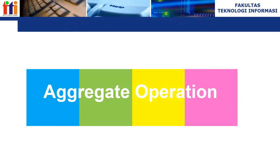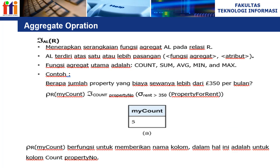Berikutnya kita masuk ke pembahasan tentang aggregate operation. Aggregate operation menggunakan simbol agregat yang menerapkan serangkaian fungsi agregat pada relasi R. Simbol agregat terdiri dari satu atau lebih pasangan fungsi agregat dan attribute. Fungsi agregat utama adalah count, sum, average, min, dan max. Contoh: berapa jumlah properti yang biaya sewanya lebih dari 350 pound sterling per bulan. Menggunakan simbol agregat PR, my_count, dengan count properti nomor dan seleksi rent lebih besar dari 350 dari tabel property for rent. Hasilnya adalah my_count = 5.